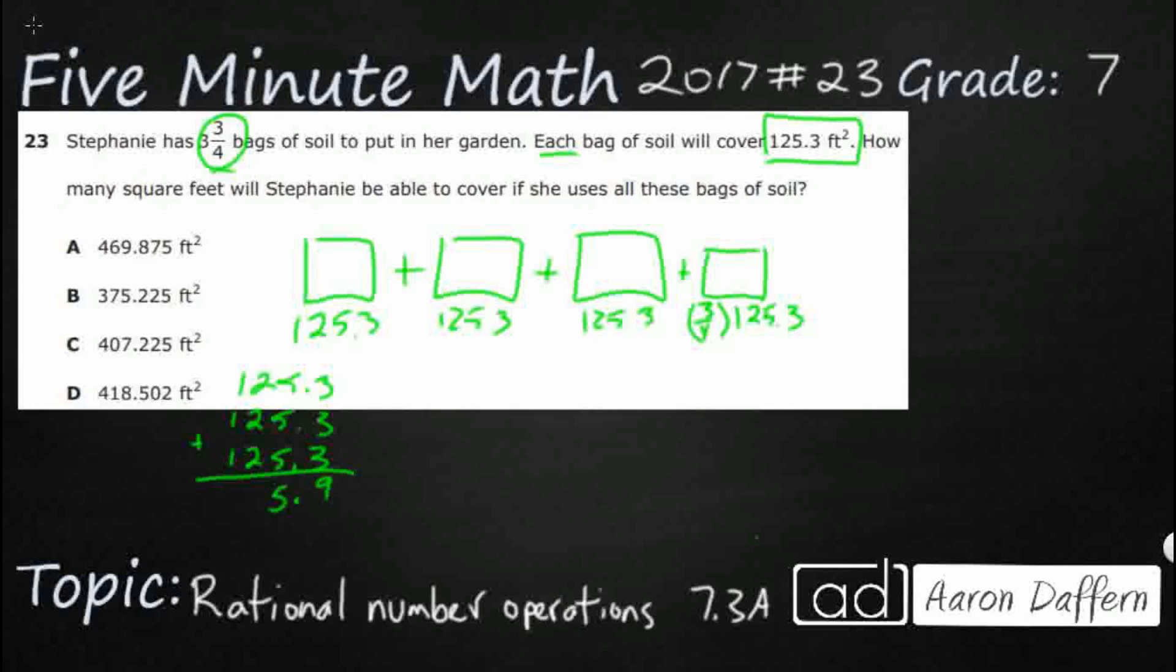Let's do the whole bags first. So that's going to be 0.9, 15, 7, that's 3, 75.9.